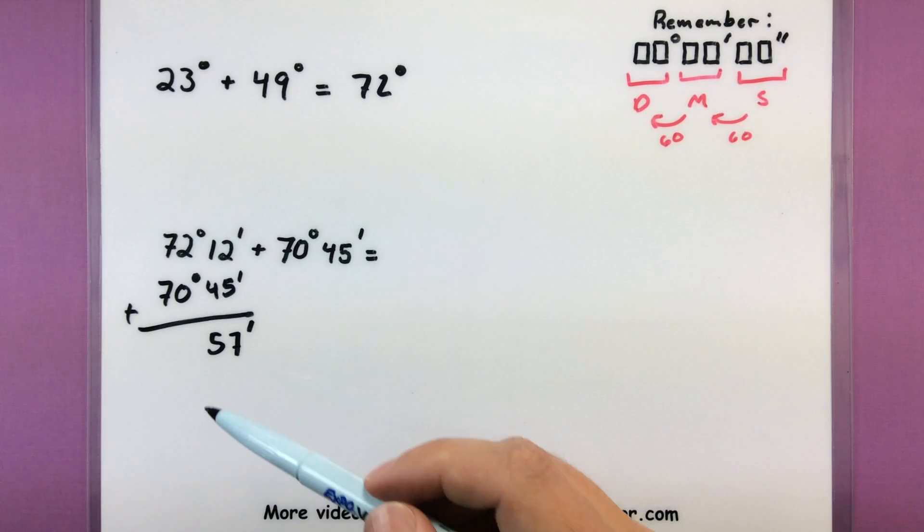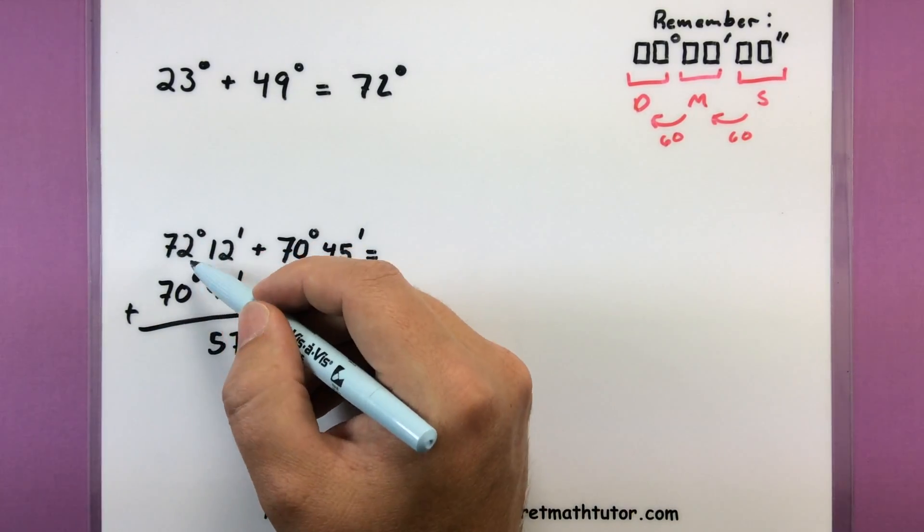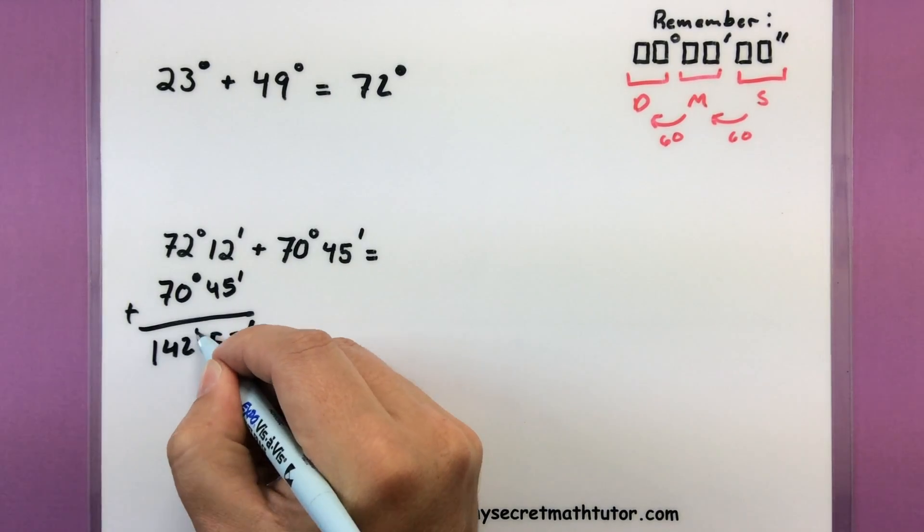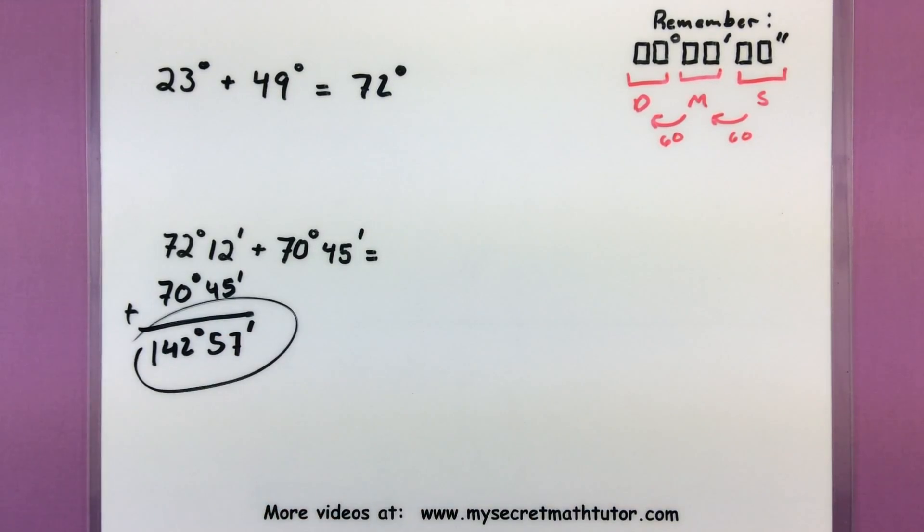Now if you get a number bigger than 60, what you want to do is take a group of 60 and throw it over into that degree column. This one is less than 60, so I'm going to leave it as is and now move on to adding my degrees. So 72 plus 70, 142. And those are my degrees. So there's my answer right there.